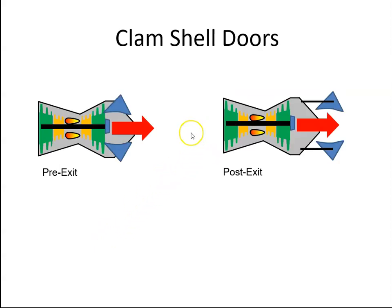An example of a mechanical blockage system is the clamshell doors. We have these doors in the shape of a clamshell. This part here is supposedly like a clamshell. The doors can be fitted before the nozzle exit, pre-exit, or they can be after the nozzle exit, post-exit.